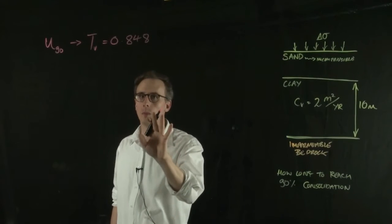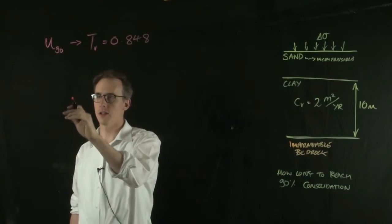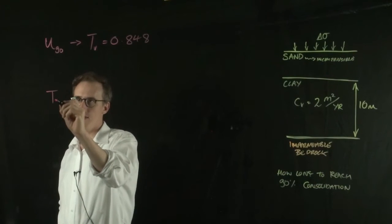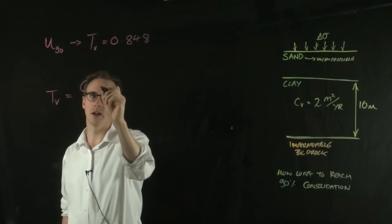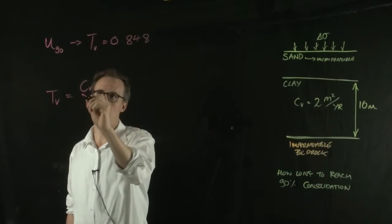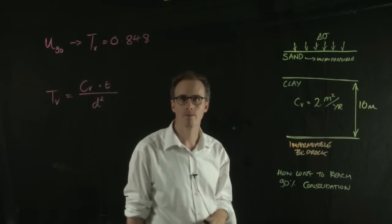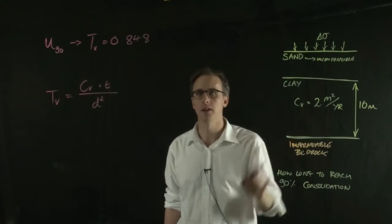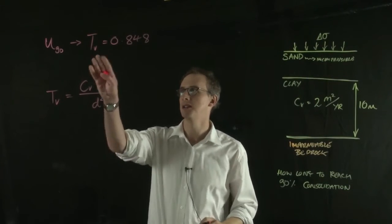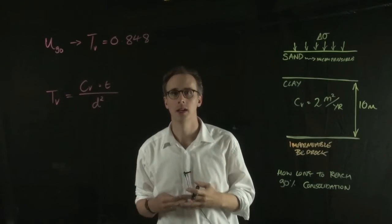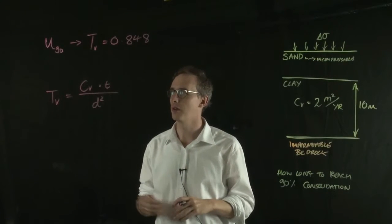So if we go back to the consolidation equation, a TV value is equal to the CV value multiplied by time all over D squared. So we're given the CV value in the equation and the TV value is derived from the amount of consolidation we're interested in.